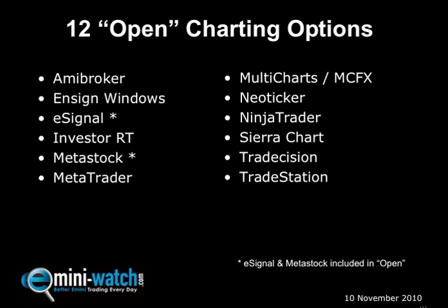The 12 open charting options are: AmiBroker, Ensign Windows, eSignal, InvestorRT, Metastock, MetaTrader, MultiCharts — and they also have a Forex platform called MCFX — NeoTicker, NinjaTrader, SierraChart, TradeDecision, and TradeStation. That list probably isn't complete, but from the research I've done, I think it's a pretty good list.